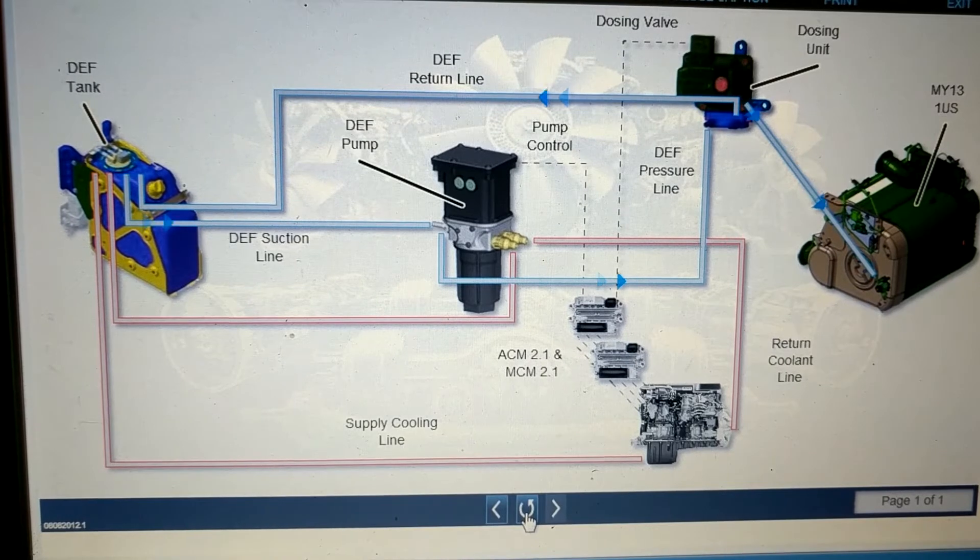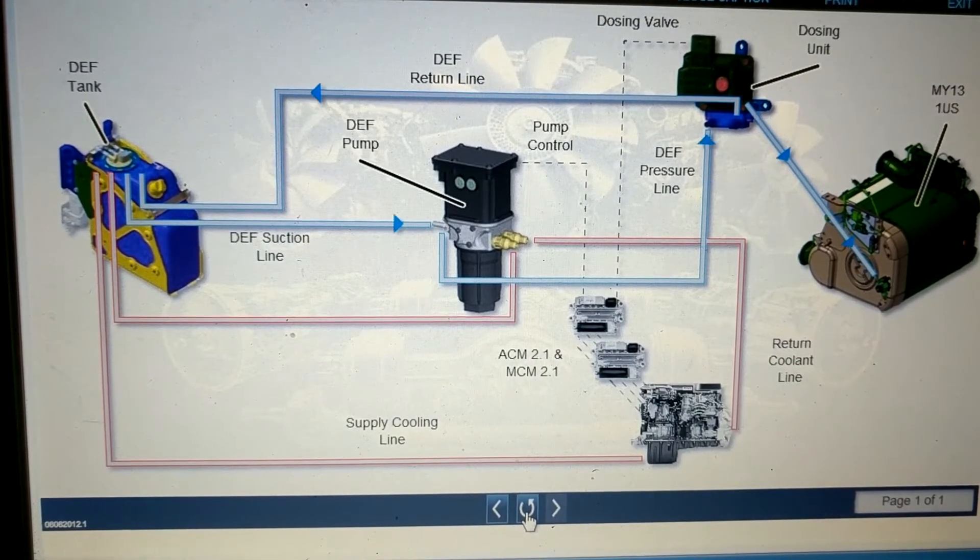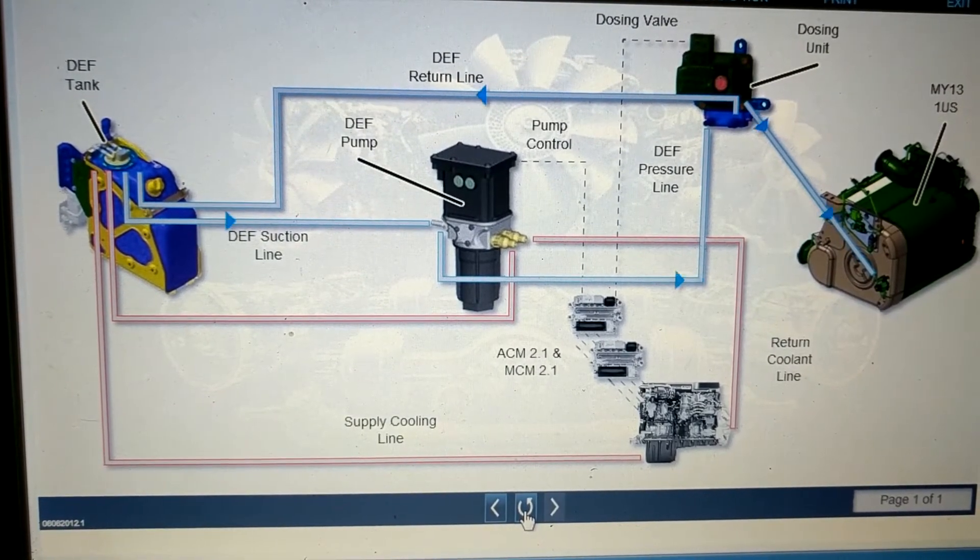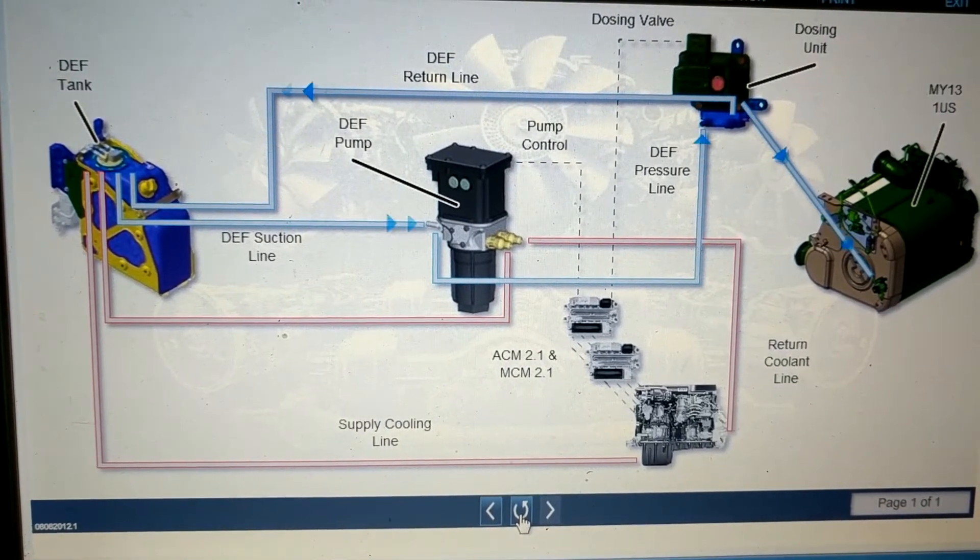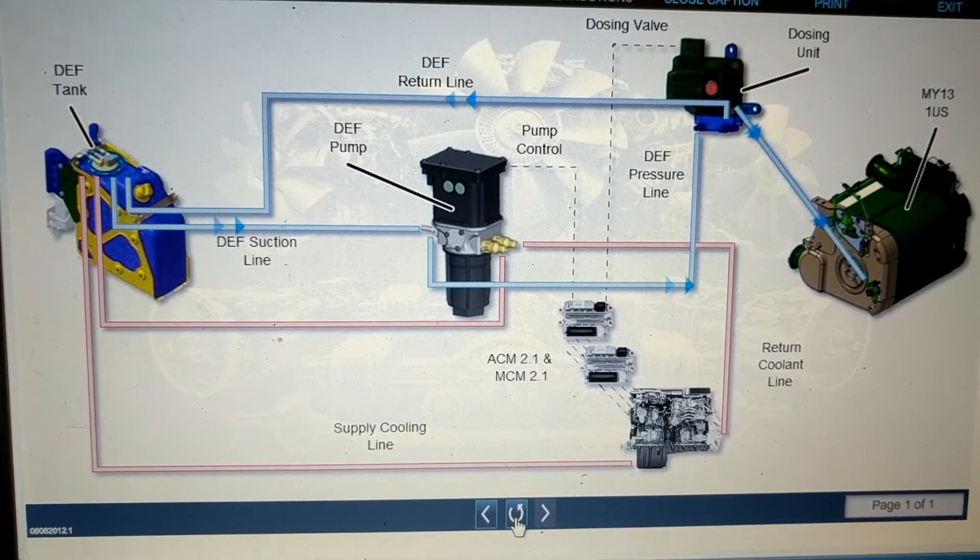DEF not sent into the exhaust stream by the dosing unit is returned via a return line that goes from the dosing unit directly back to the DEF tank. Electrically heated DEF lines continue to be used for GHG-14.